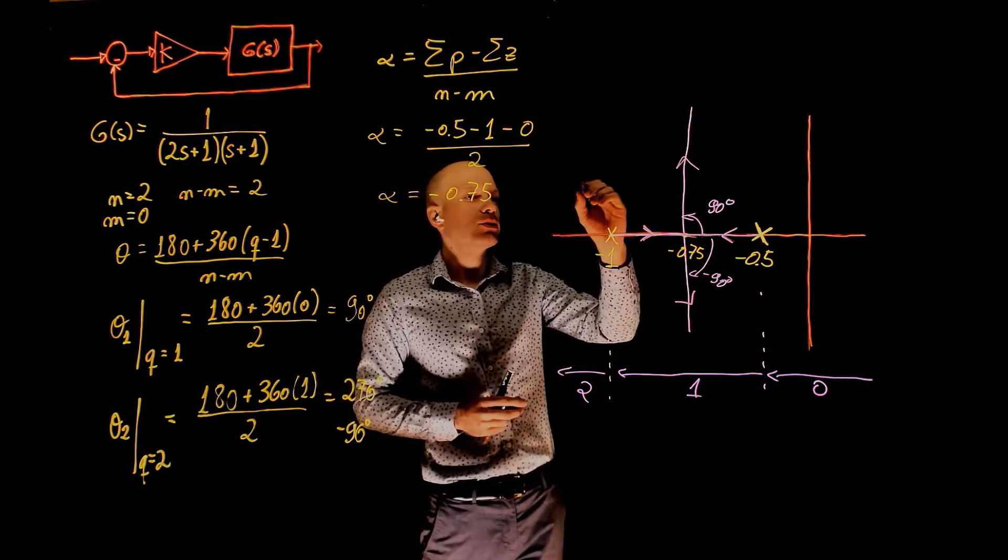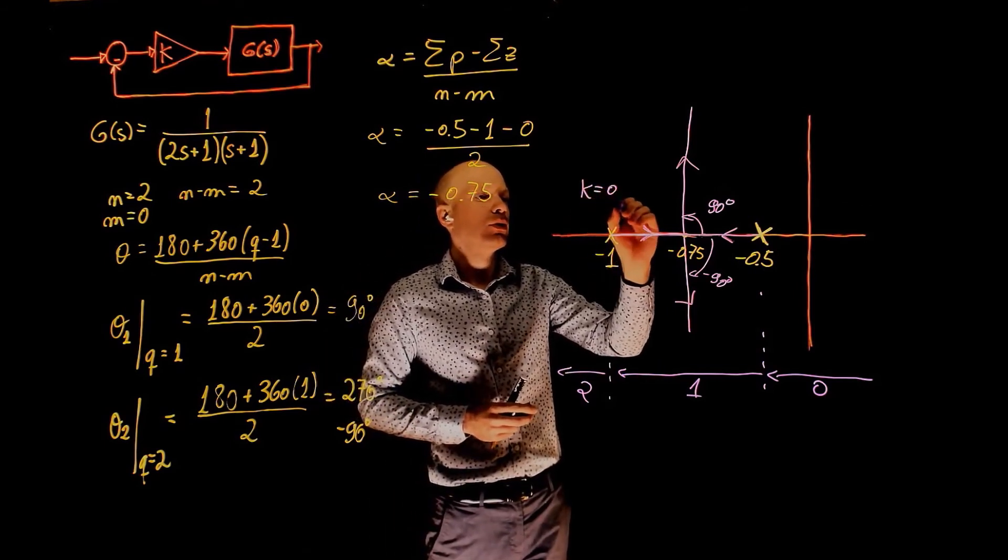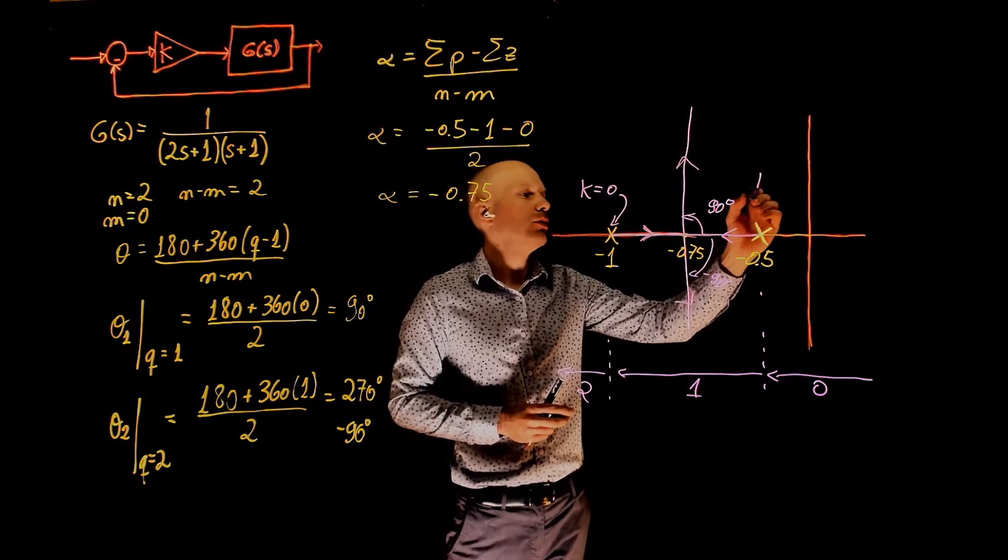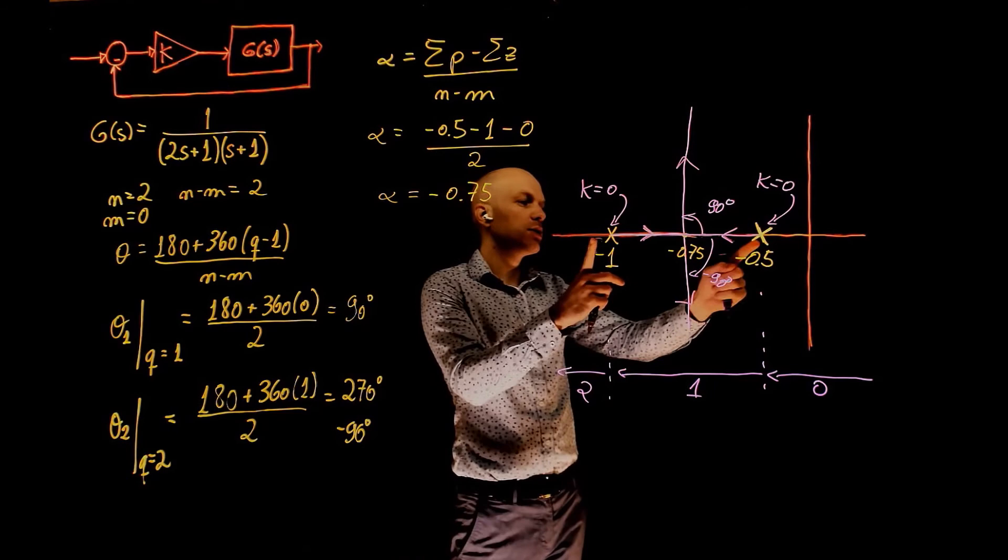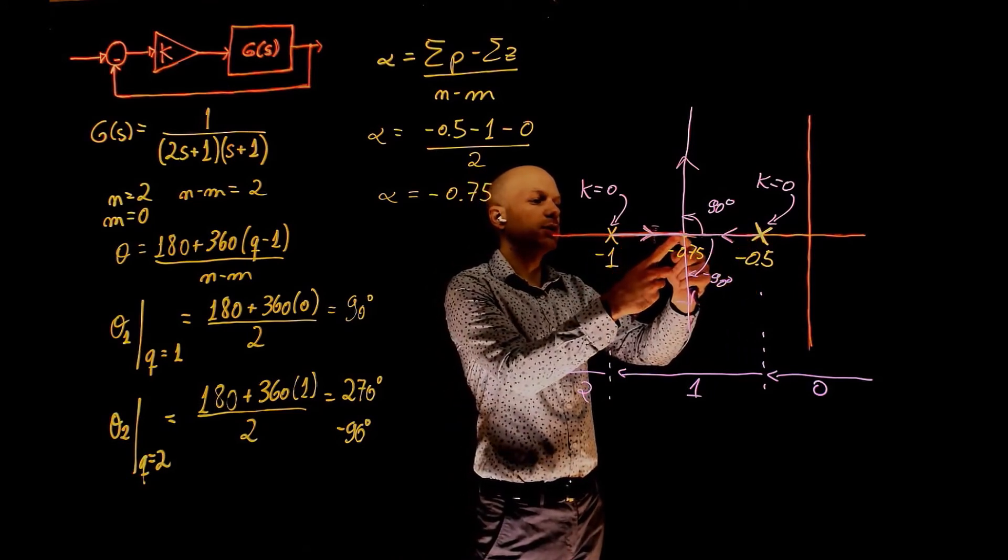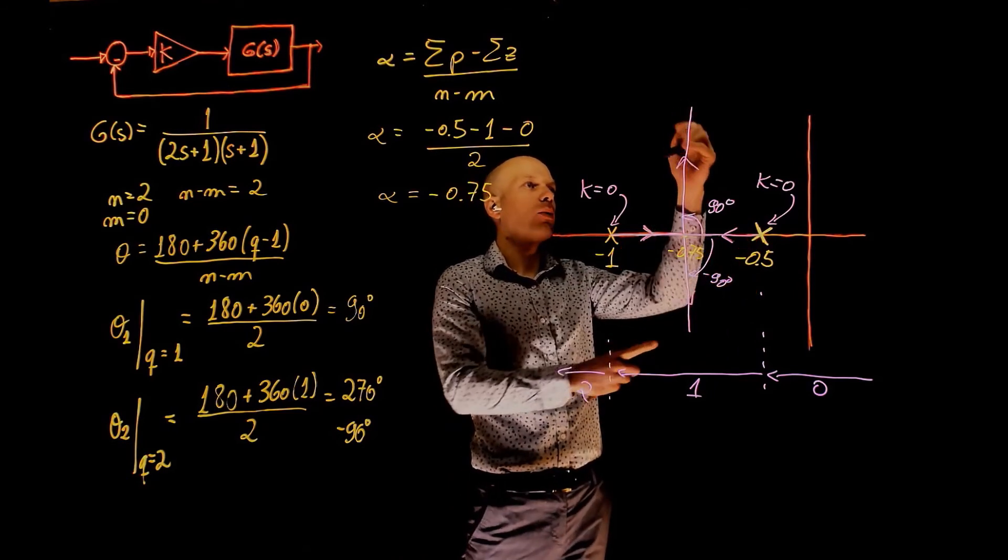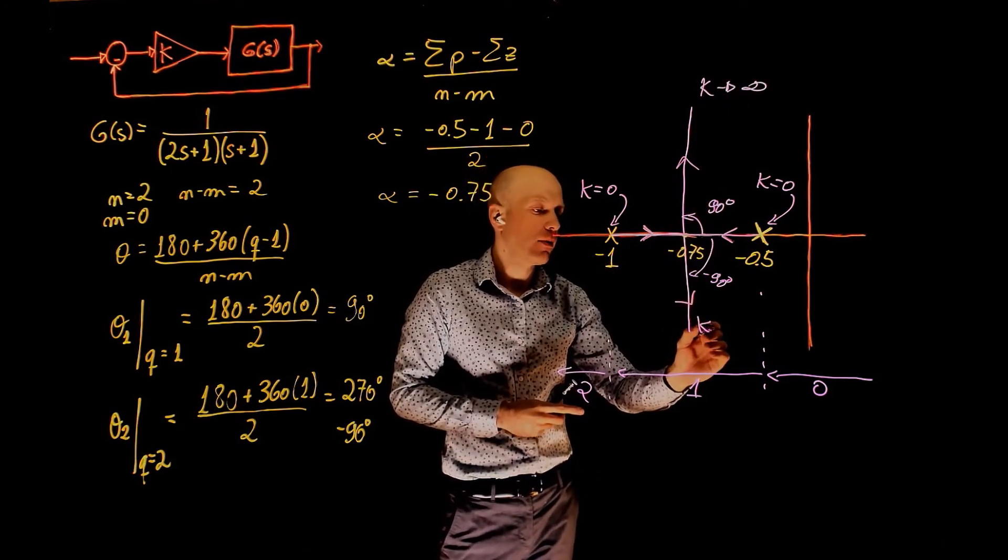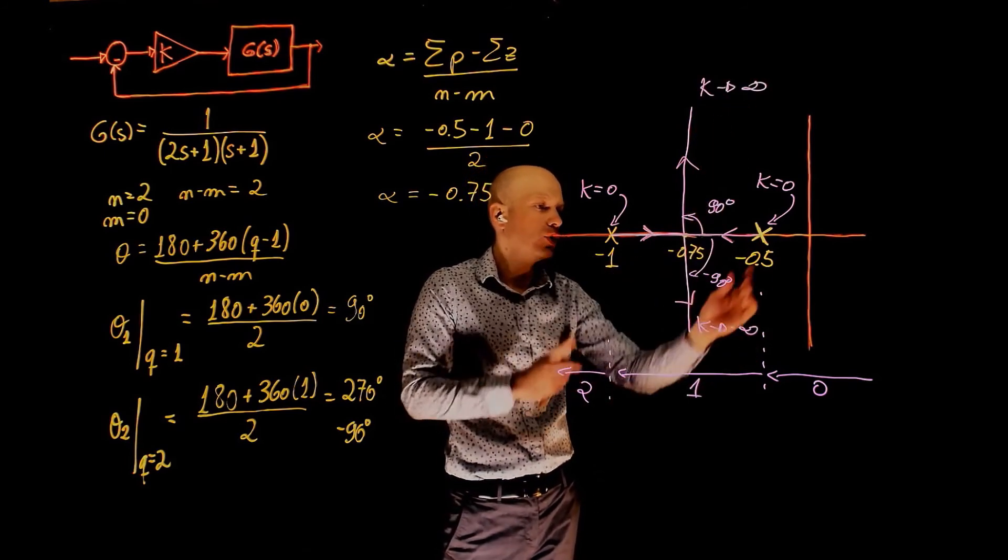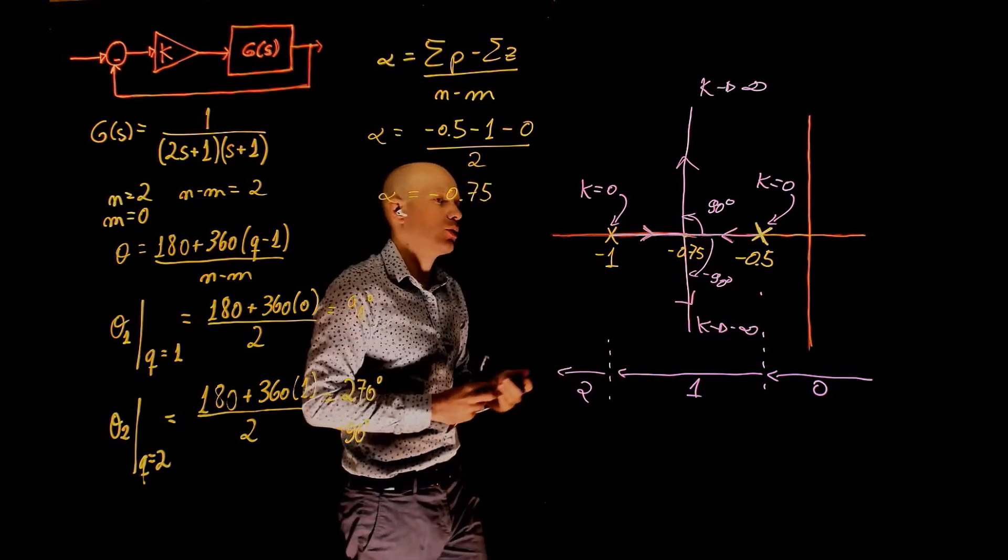When k equals 0, we have one pole here and one pole there. And as k increases, these real poles will come together, become imaginary, break away and go to infinity when k tends to infinity. One goes up, one goes down. Which one goes up, which one goes down, it doesn't matter.